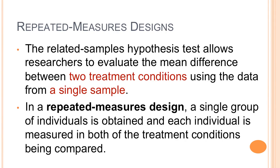The dependent sample t-test is also called a related measures or paired t-test. Related samples allows you to evaluate the mean difference between two treatment conditions using the data from a single sample. The same sample of people are measured twice — a single group of individuals is obtained, and each individual is measured in both treatment conditions being compared. You could have a baseline measure, give them a treatment, and measure them after to see if they've changed. You have only one sample, but that one sample is measured twice.